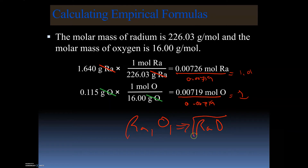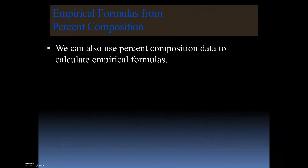The empirical formula is RaO. This is an ionic compound, and ionic compounds are typically written in their empirical formulas. If we were dealing with a covalent compound, we would handle it differently, but in this example the empirical formula is RaO — one radium and one oxygen.